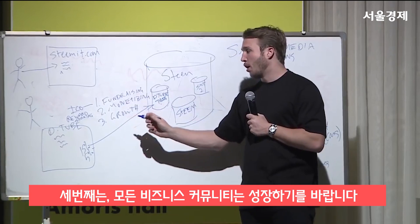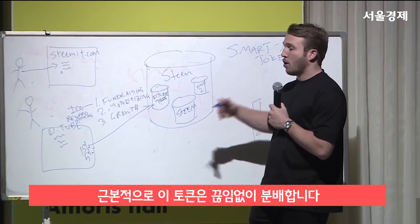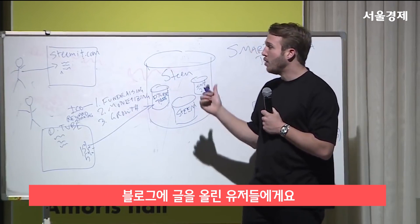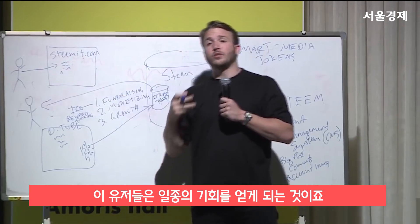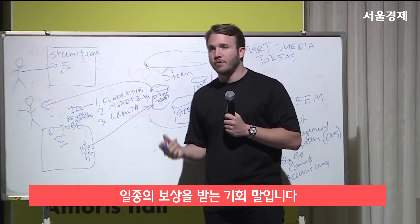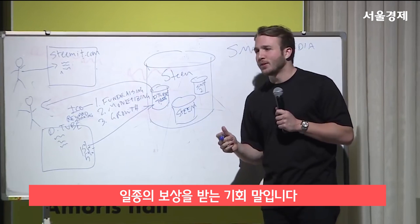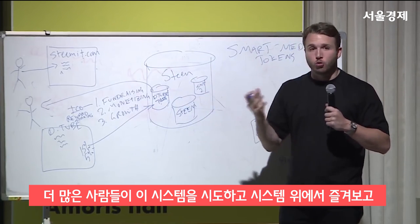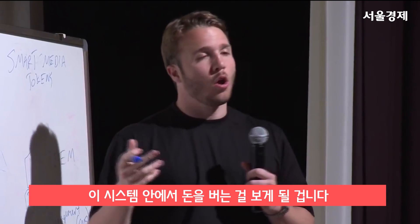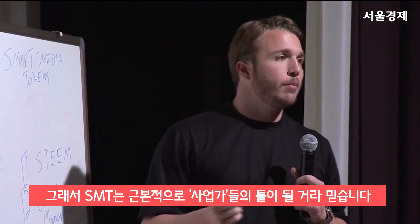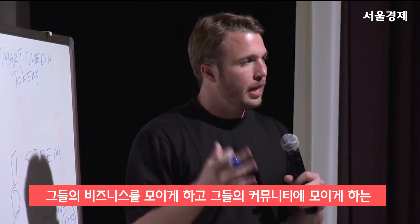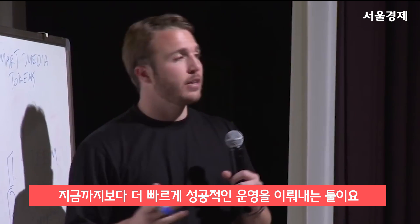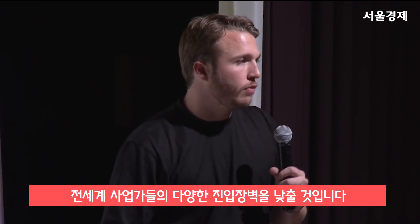And the third major thing that every business or community wants is growth. Tokens are constantly being distributed to end users who are writing blogs. These people see opportunity, and when there's opportunity to earn and be compensated for something, the word tends to get out. So more and more people begin to show up to try the system, to play with the system, to see if they can earn inside it. SMTs, I believe, are basically an entrepreneur's tool to getting their business and community kick-started and successful faster than ever before. Token technology like Smart Media Tokens is lowering the barrier to entry for entrepreneurs everywhere.